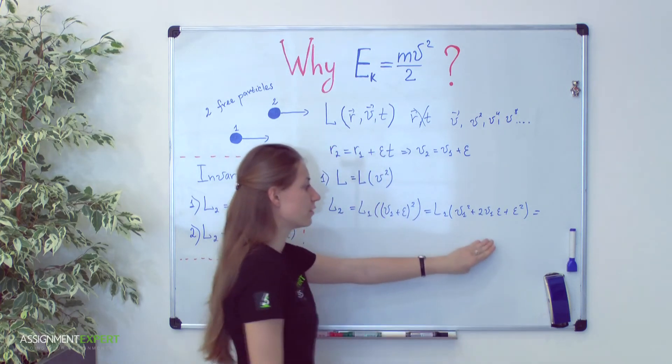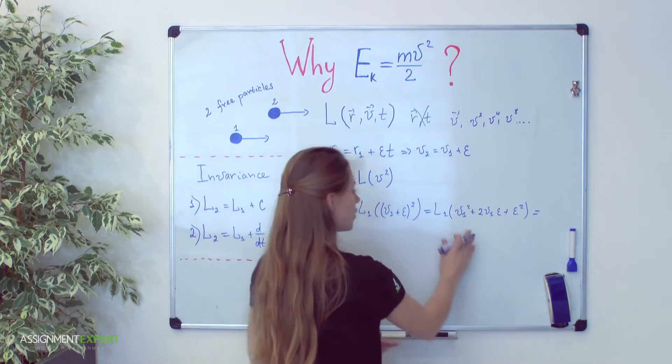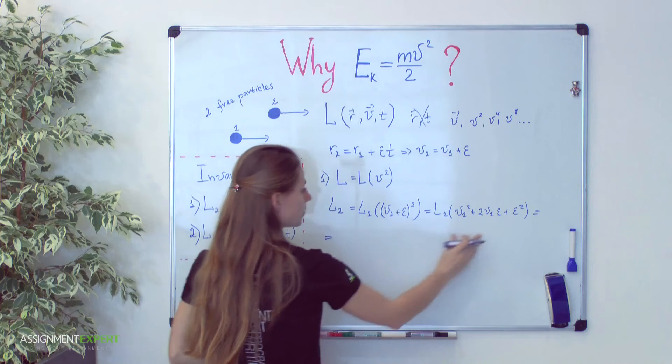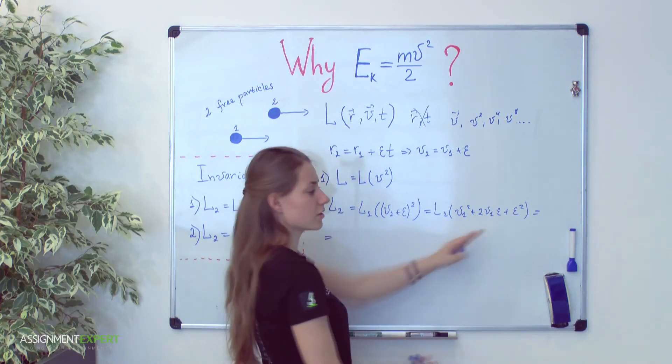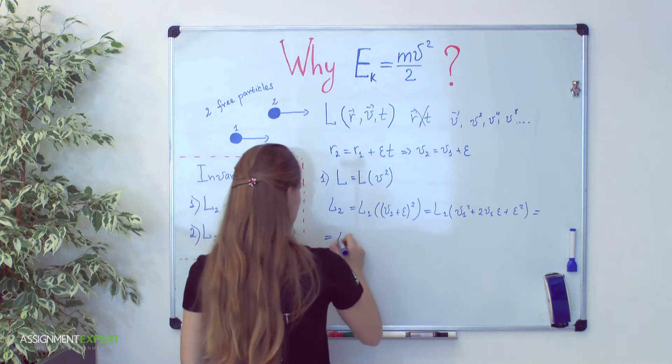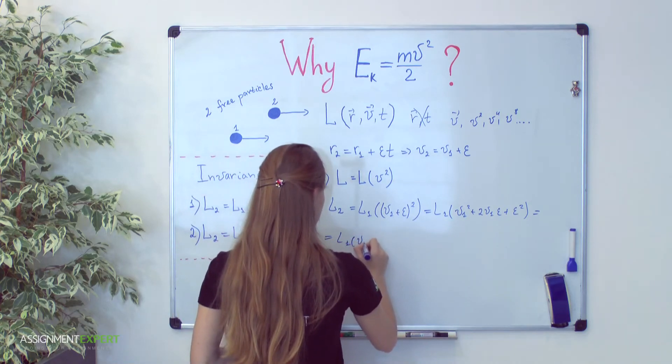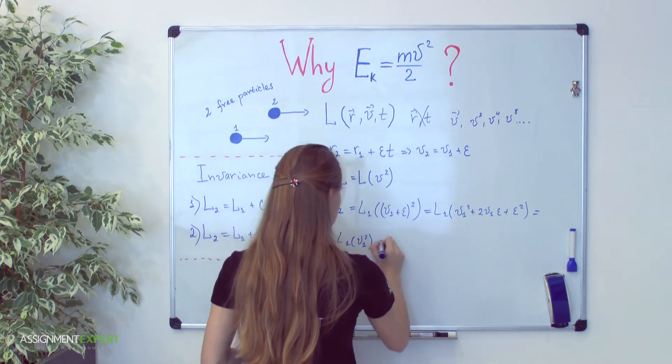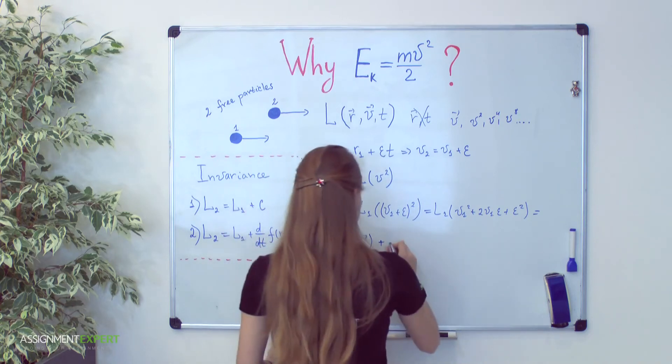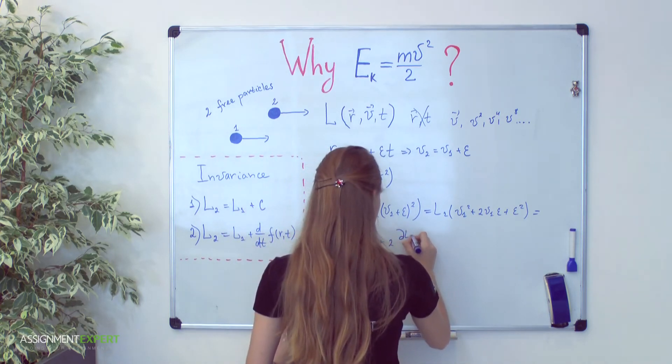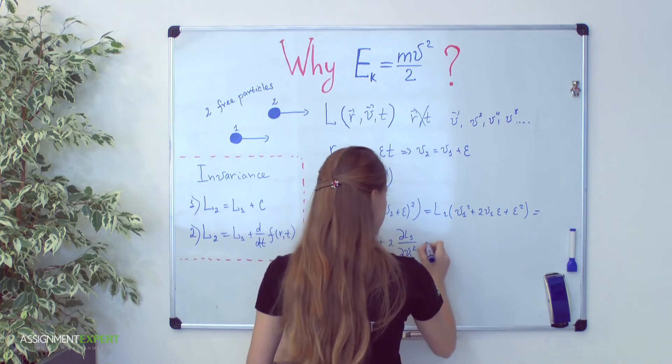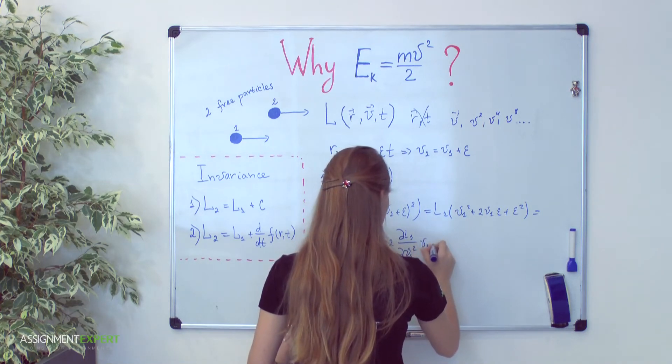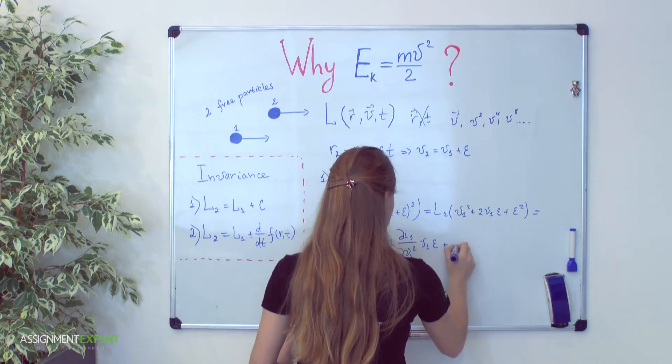As our velocity epsilon is very small velocity, we can expand this expression in power of epsilon and neglect high order infinitesimals. We get L1 of v1 square plus 2 dL1 over dv1 square multiplied by v1 epsilon plus epsilon square.